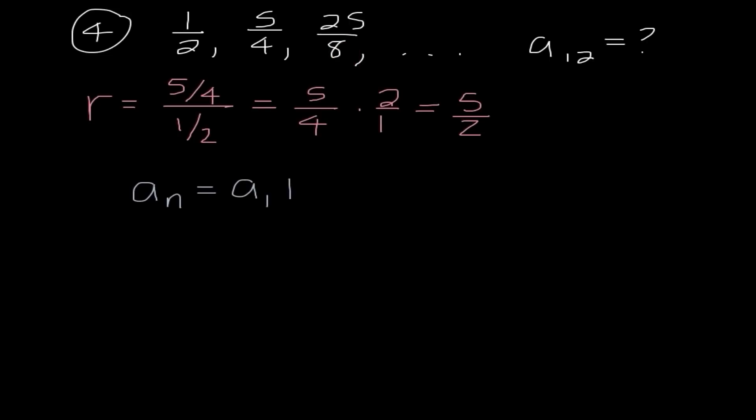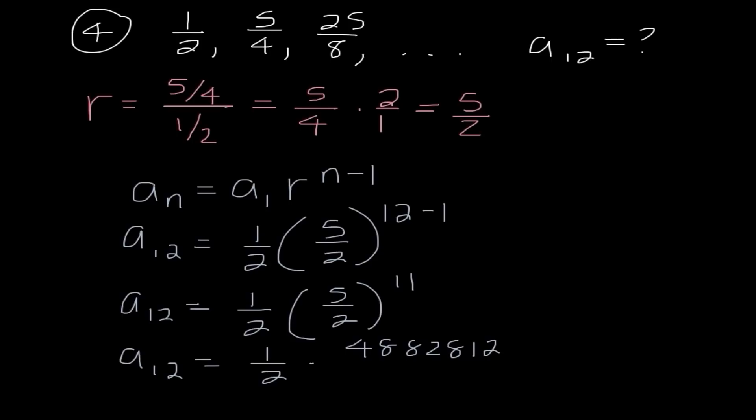So now I'm going to say a sub n equals a sub 1 times r to the n minus 1 power. We're trying to find the 12th term. So I have 1/2 times 5/2 to the 12 minus 1 power. So I have a sub 12 equals 1/2 times 5/2 to the 11th power. And this is one that I think we're going to get some really large numbers. So I'm going to do 5 to the 11th power separately. And I get 48,828,125. And then I'm going to do 2 to the 11th separately. And I get 2,048.